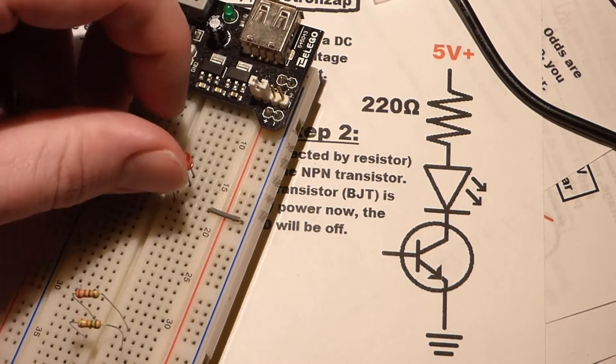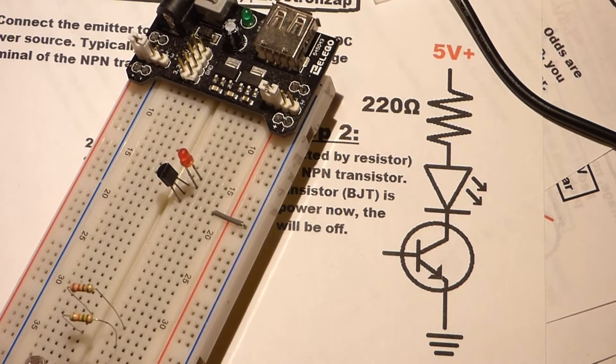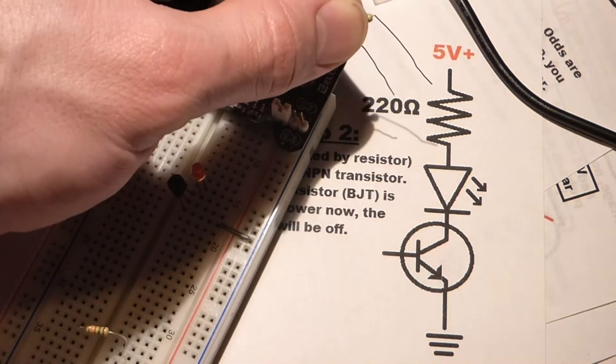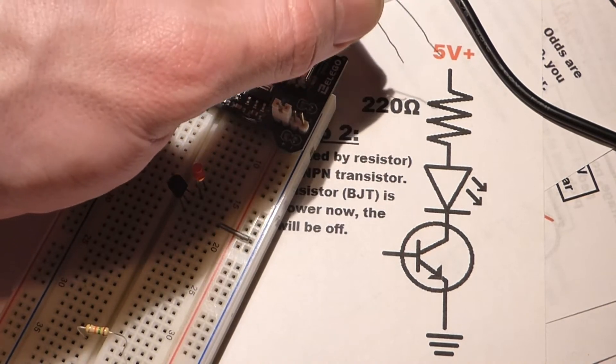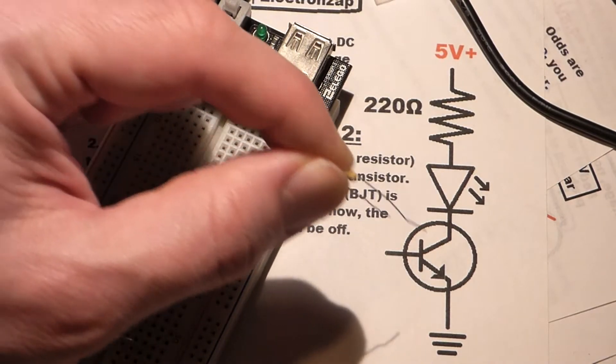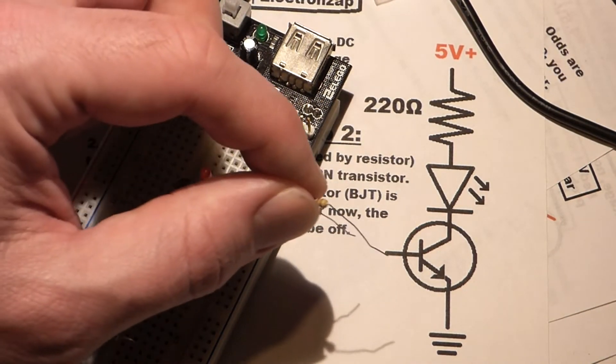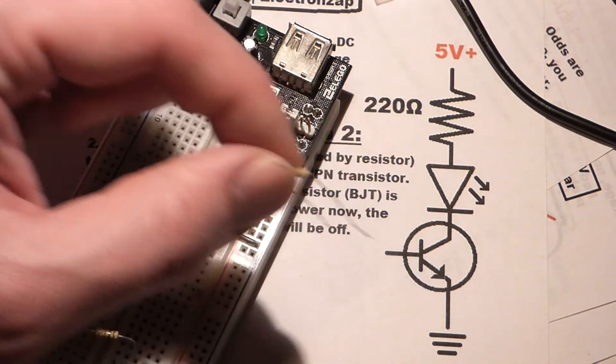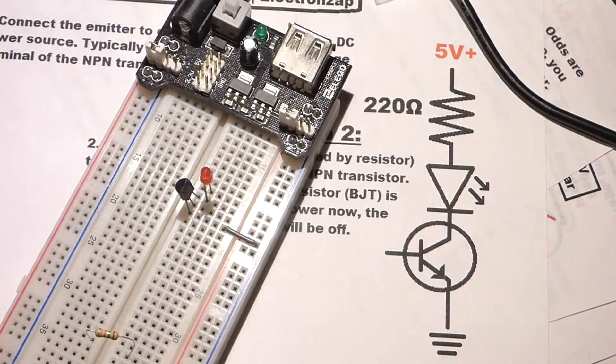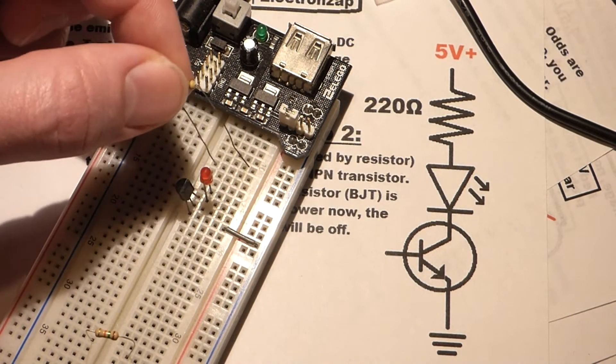I usually just go by the lead length because I don't trim them. So we've got that there. Now we need a resistor to protect the LED. I'm going to use a 220 ohm resistor because we're using a 5 volt power supply. The LED will take the 5 volts if you don't have a protective resistor.